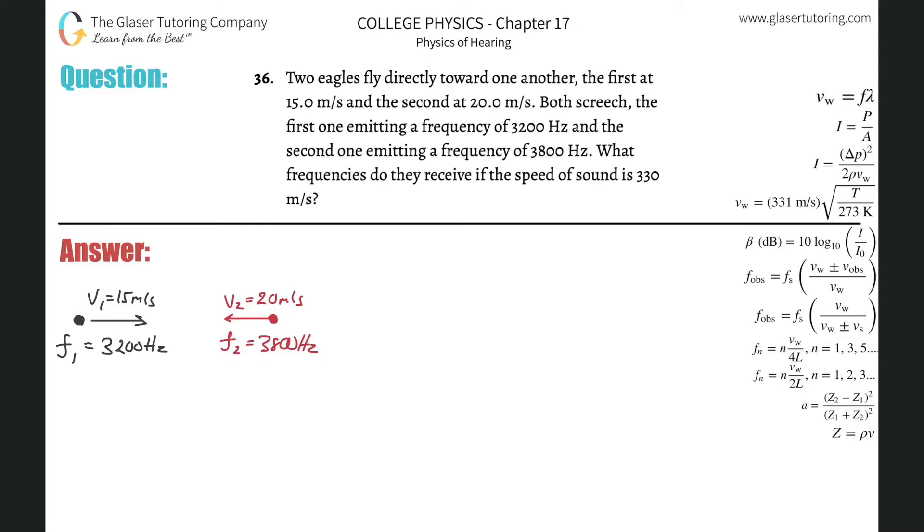Number 36. Two eagles fly directly toward one another, the first at 15 meters per second and the second at 20 meters per second. Both screech. The first one emitting a frequency of 3200 hertz and the second one emitting a frequency of 3800 hertz. What frequencies do they receive if the speed of sound is 330 meters per second?